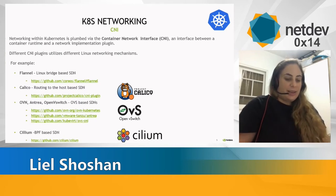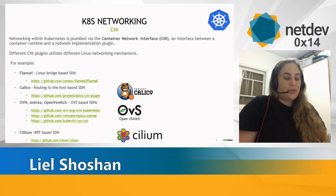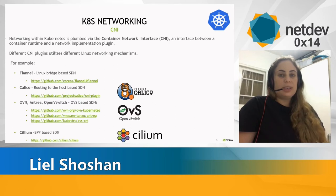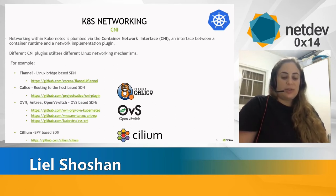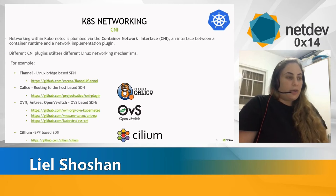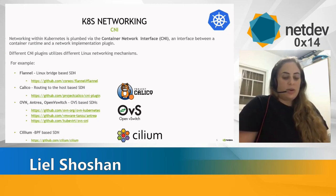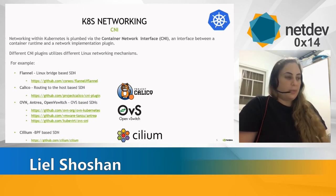One such direction is the Netfilter flow table infrastructure, which provides a fast data path for the classic Linux forwarding path. It allows you to accelerate packet forwarding in software and in hardware if your NIC supports it, by using connection-based network stack bypass. In these flow tables, entries are represented through a tuple composed of the input interface, source and destination address, source and destination port, and layer 3/layer 4 protocol, and each entry also caches the destination interface and the gateway address to forward the packet.